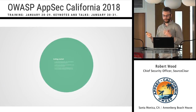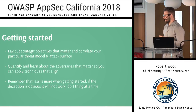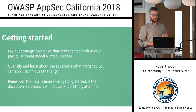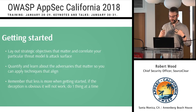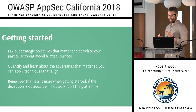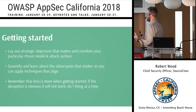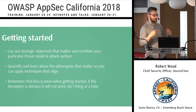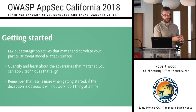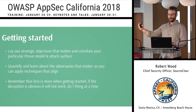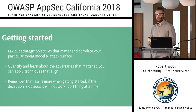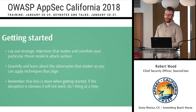Three things to keep in mind if you're interested in getting started with a deception capability at your organization. First: lay out and define strategic objectives that matter to your particular threat model and organization. Depending on the assets you're protecting and the industry you work in, this is going to differ from environment to environment — that's why the cookie-cutter approach does not work. They can help, but they are not going to solve your problem, just like there is no AppSec tool or appliance.